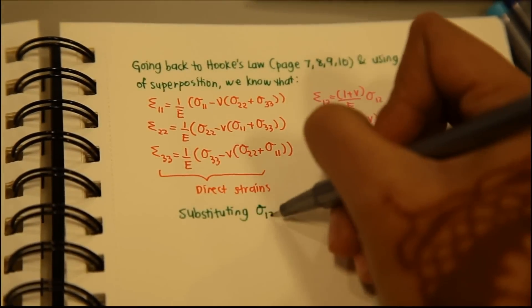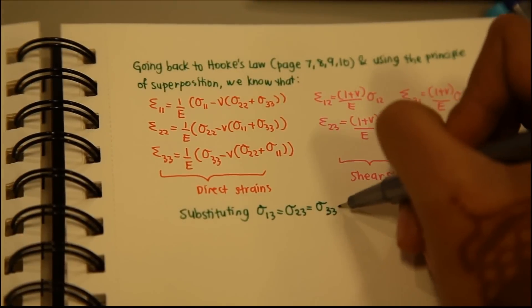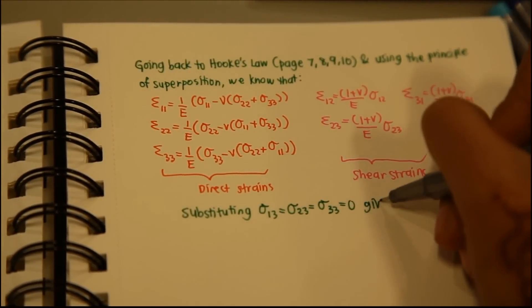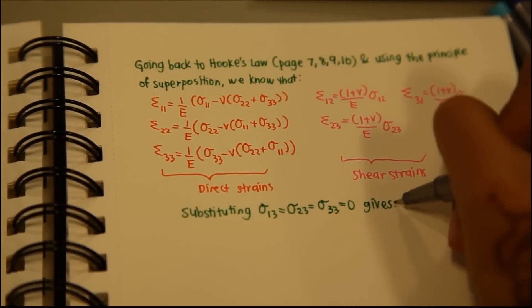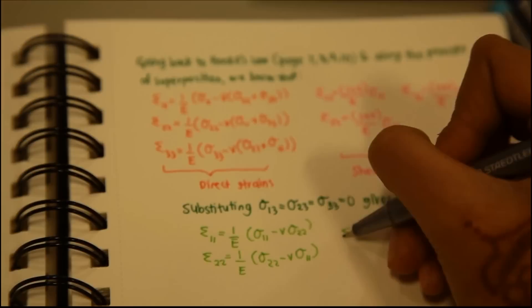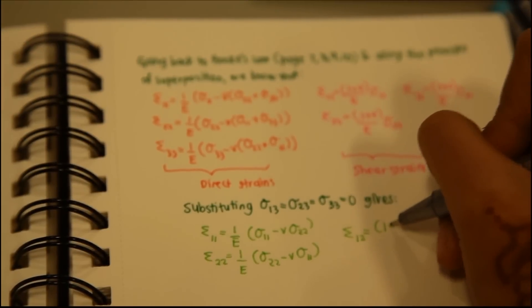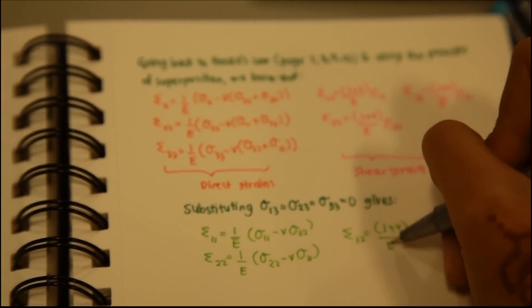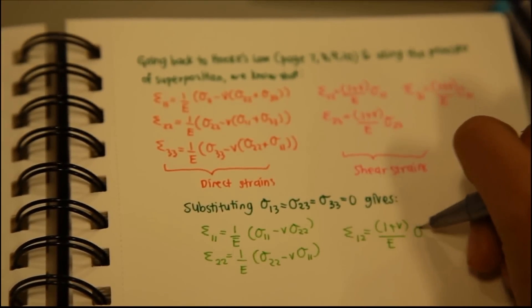Substituting into the previous equations that sigma 1,3, sigma 2,3, and sigma 3,3 are equal to zero, we get the following set of equations for epsilon 1,1, epsilon 2,2, and epsilon 1,2.